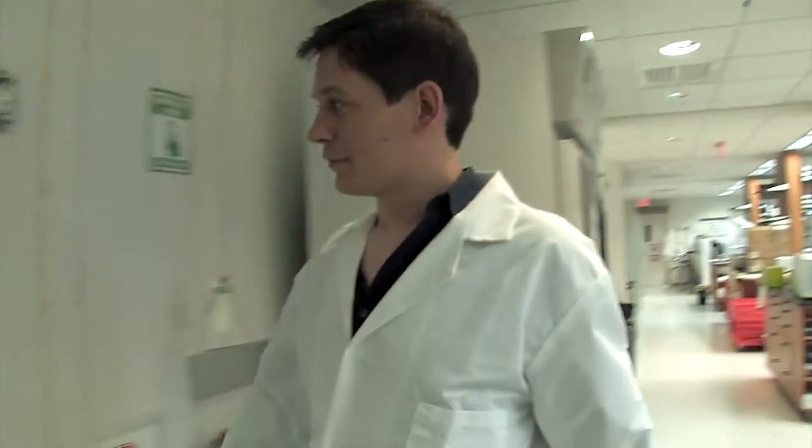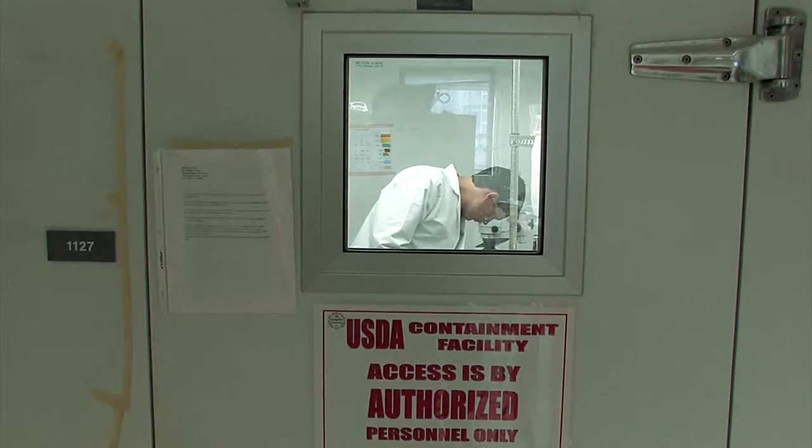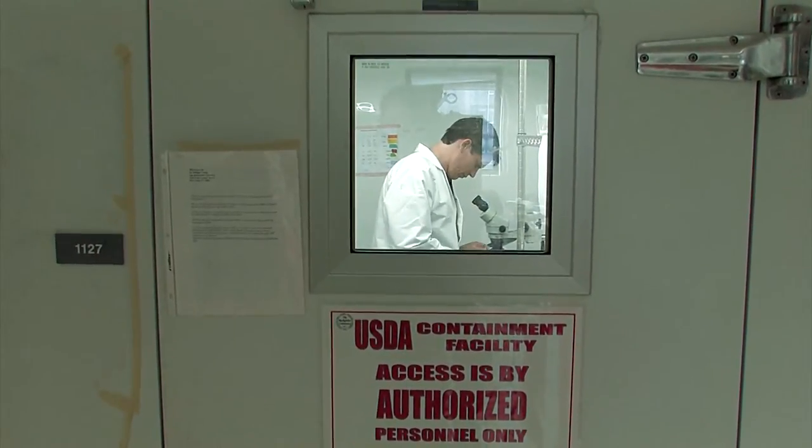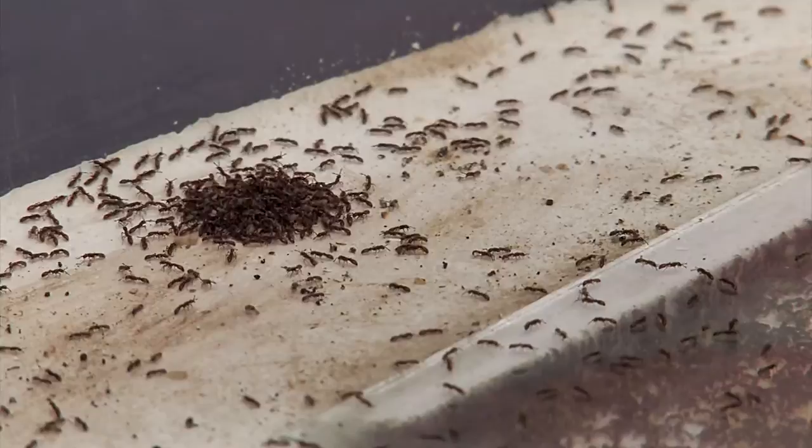I'm Daniel Kronauer and I'm the head of the laboratory of insect social evolution at Rockefeller University. In my lab, we use ants as model organisms to study social evolution and social behavior. That's a fascinating topic because we as humans live in very complex societies.